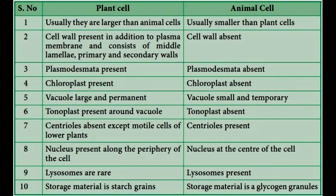In plant cell, chloroplast is present. Because they are autotrophic in nature and they have to prepare their own food, they have chloroplast. In animal cell, chloroplast is absent.